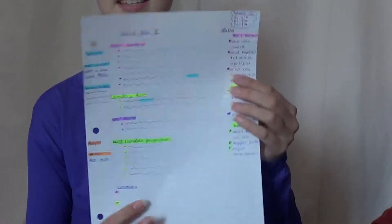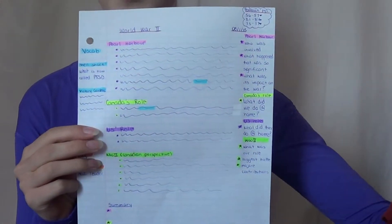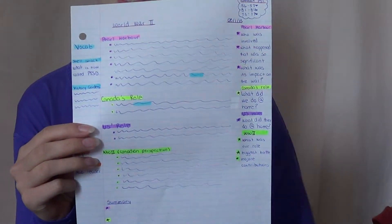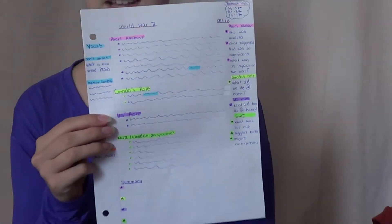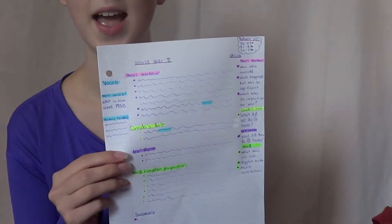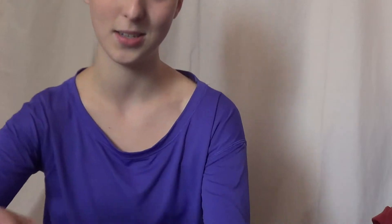So to start off, you can see that I am a very colorful person when it comes to note-taking. I don't like plain boring notes. However, I've realized that taking notes in very colorful pens just makes my notes look really messy, so I just prefer to use highlighters — but you're more than welcome to do these in different colored pens as well.